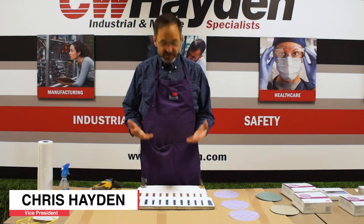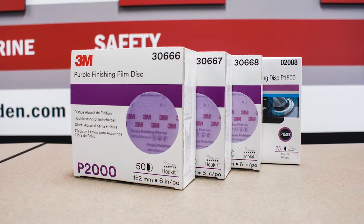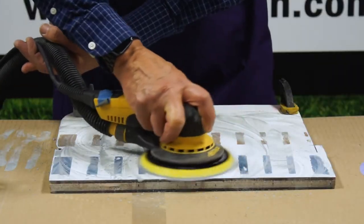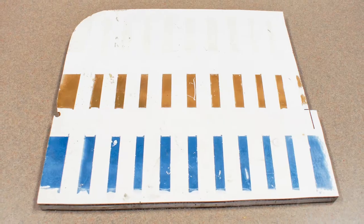Today I want to do a video on defect removal using 3M purple finishing film discs and right-angle orbital sanders to remove the defects that are introduced into this gel-coated panel right here.